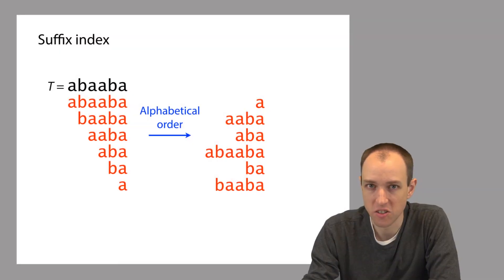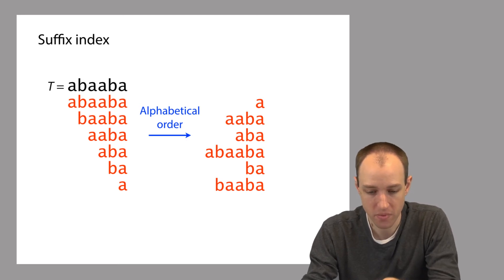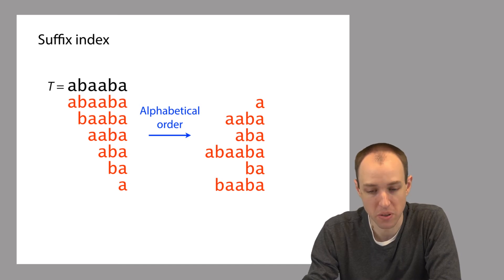So one simple idea is to just take all the suffixes from the genome, and then put them in alphabetical order, just like this. So again, here in black is our genome, here in red is all the suffixes, and we're just going to put those suffixes in alphabetical order. And now what we have is simply a list of all the suffixes of the genome, but they're in alphabetical order. And if we want to query the index, we can use our old friend binary search.